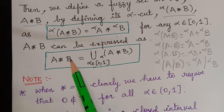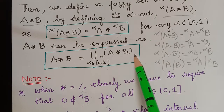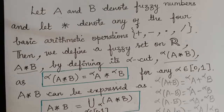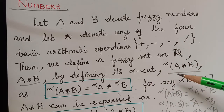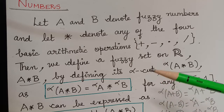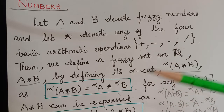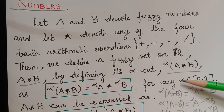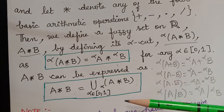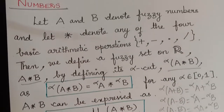A star B is taken as the union of all the special fuzzy sets A star B. This is the definition of fuzzy arithmetic based on interval arithmetic. In our next video, we will consider two fuzzy numbers A and B and perform all these operations upon them, checking this in general for the star operation. Thank you.